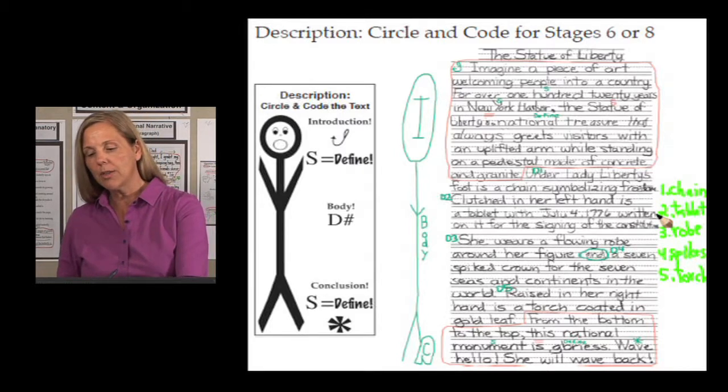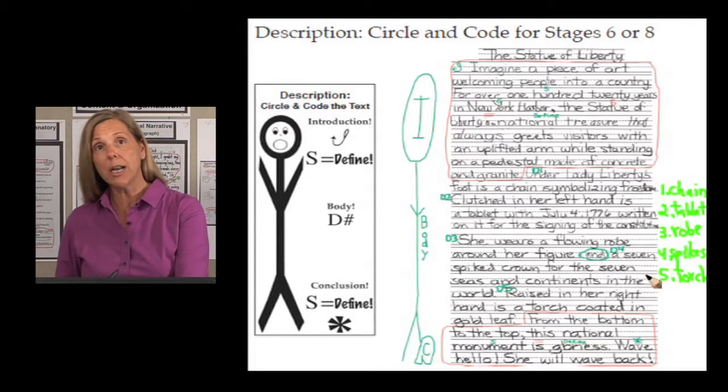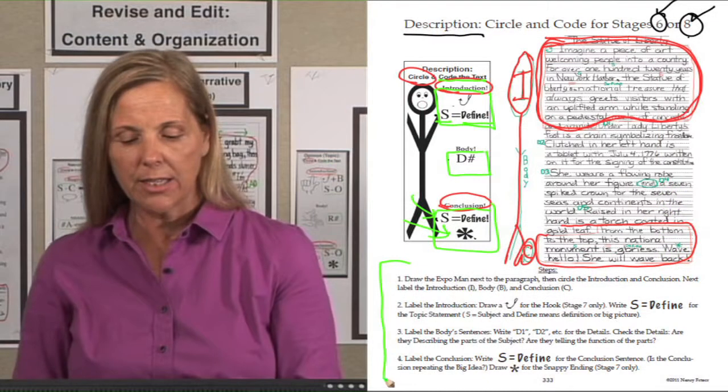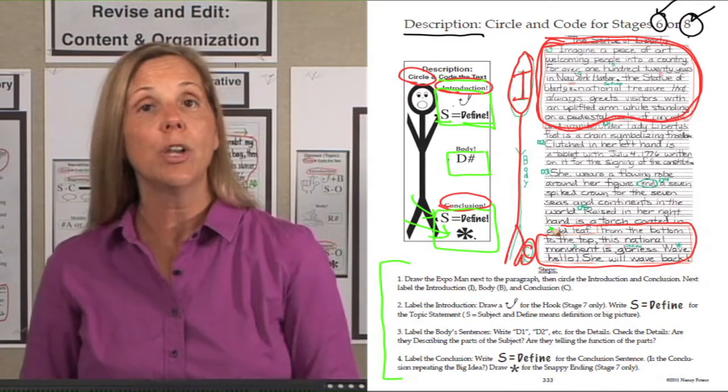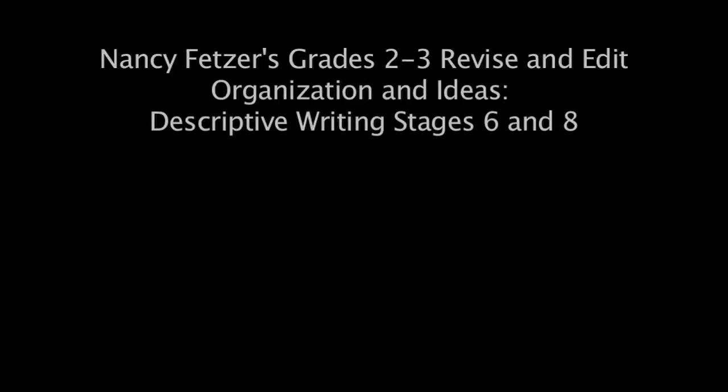Notice over here on the side, I wrote one through five to make sure that I listed out each part that I have all the parts that I wanted to describe and that these parts truly were on the Statue of Liberty. Below this, you will see the steps that you can follow in order to circle and code descriptive writing.